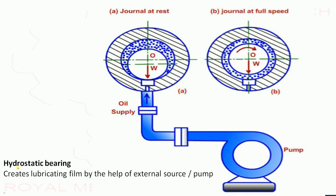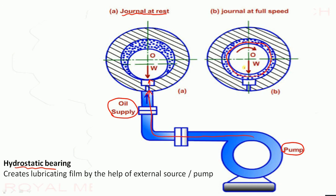The hydrostatic bearing is similar to the hydrodynamic bearing, but the key difference is that oil is supplied by an external pump. This pump pressurizes the oil inside the journal and bearing. When rotation starts, the oil film develops in the clearance between journal and bearing to avoid friction. In the hydrostatic bearing, lubrication film is created with the help of an external source or pump.